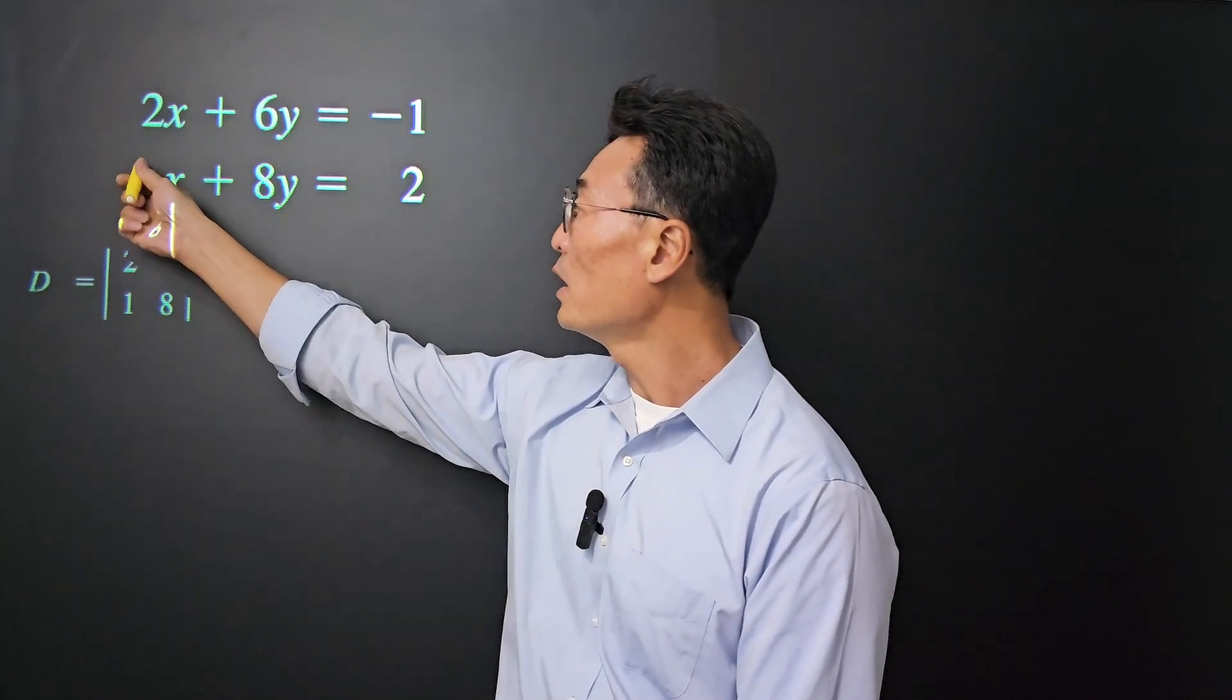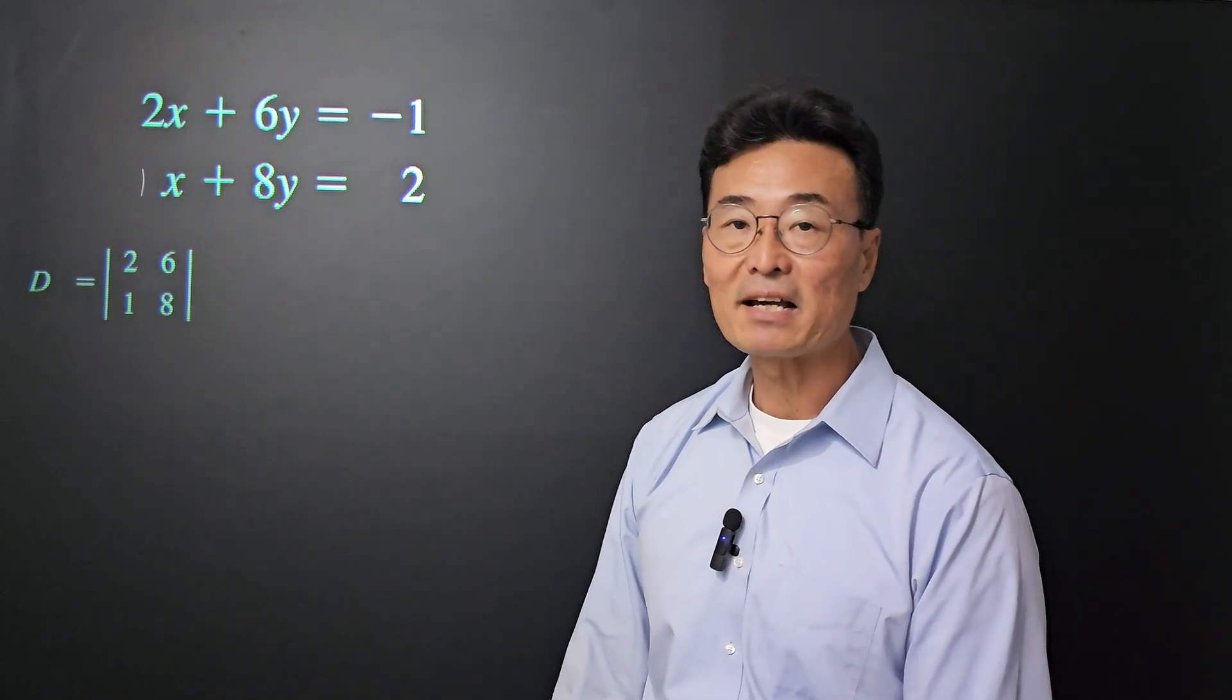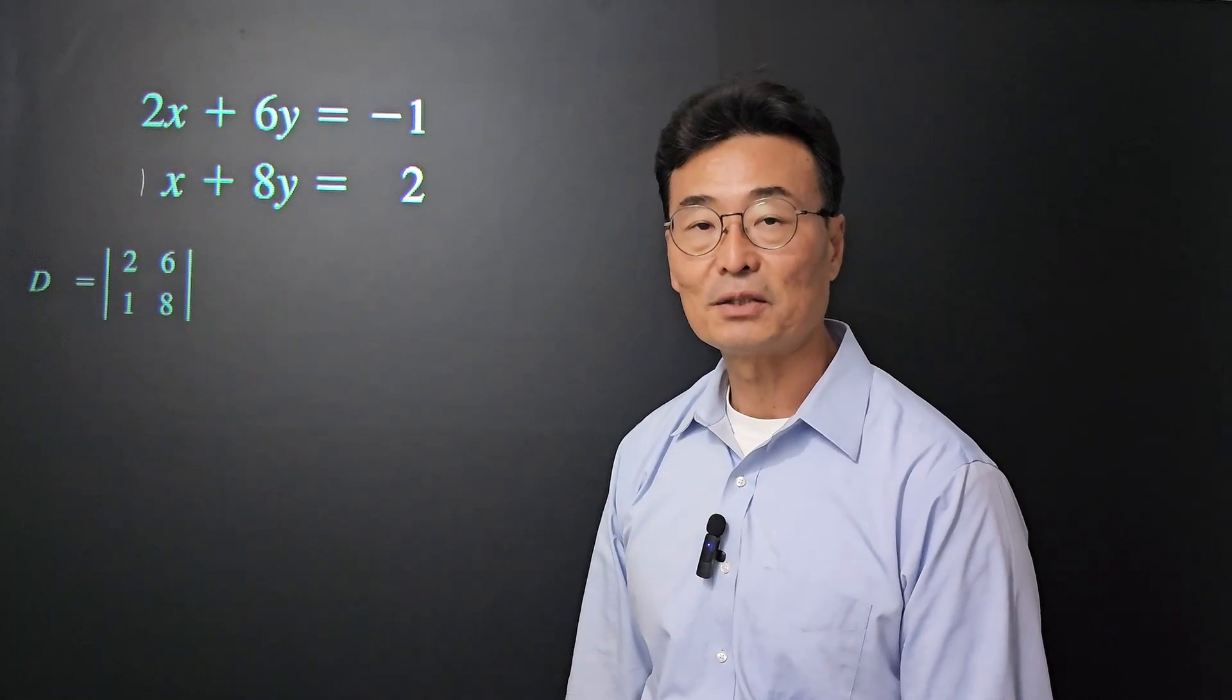Next, we take the 1 and the 8 from the x and y of the second equation and put it in the second row.